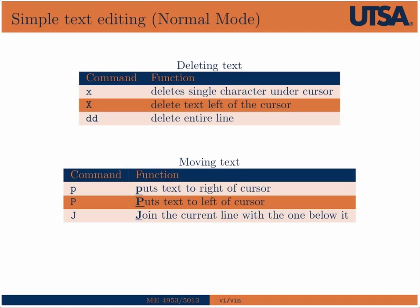X will delete a single character under the cursor. Capital X deletes to the left of the cursor. DD will delete an entire line. When you delete a character or line, it's stored in a buffer — think of it like a cut command in Windows. To paste it somewhere else, use the P command for put. Lowercase p puts text to the right of the cursor, capital P to the left. You can also use capital J to remove newline endings and join two lines.